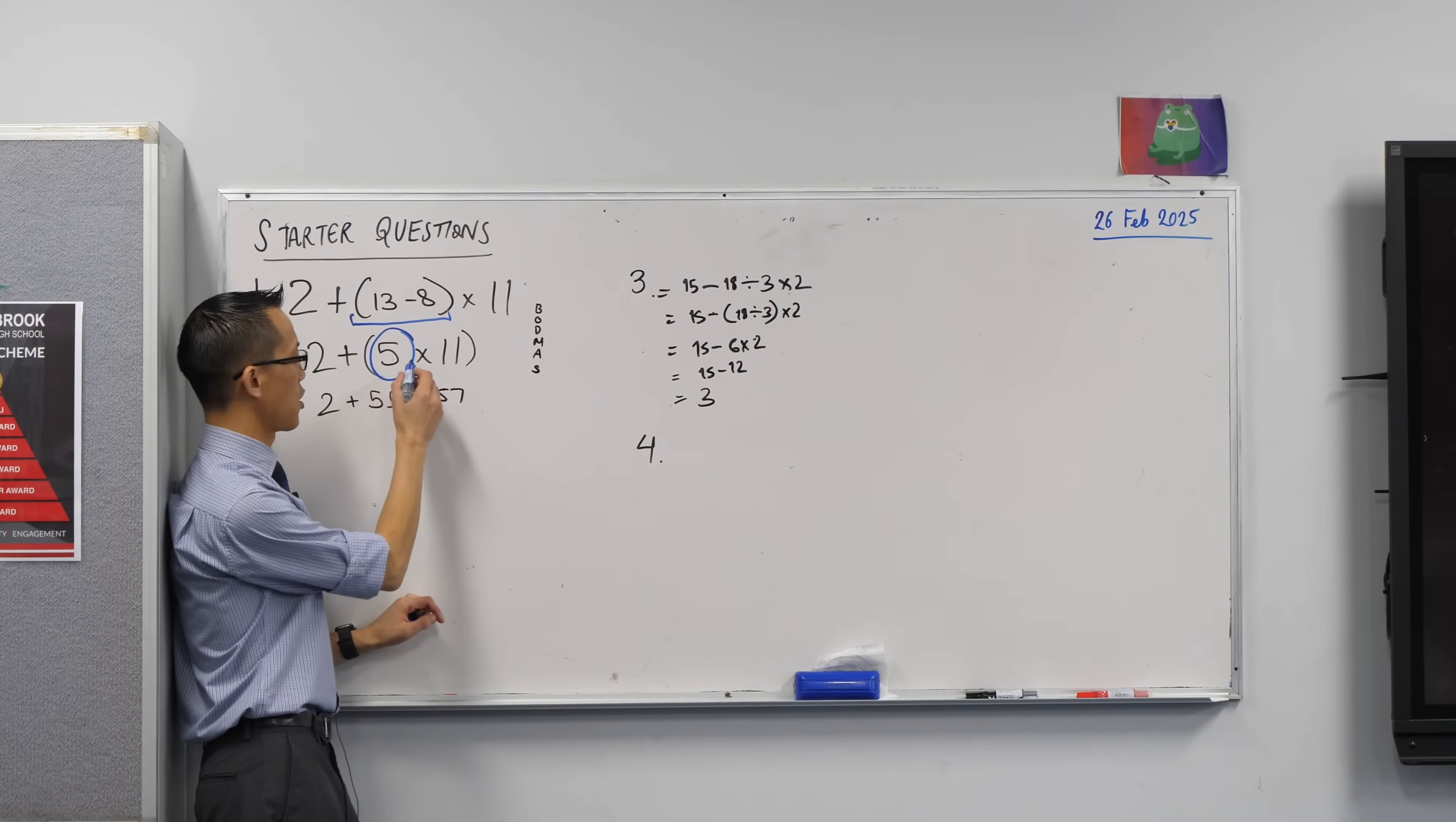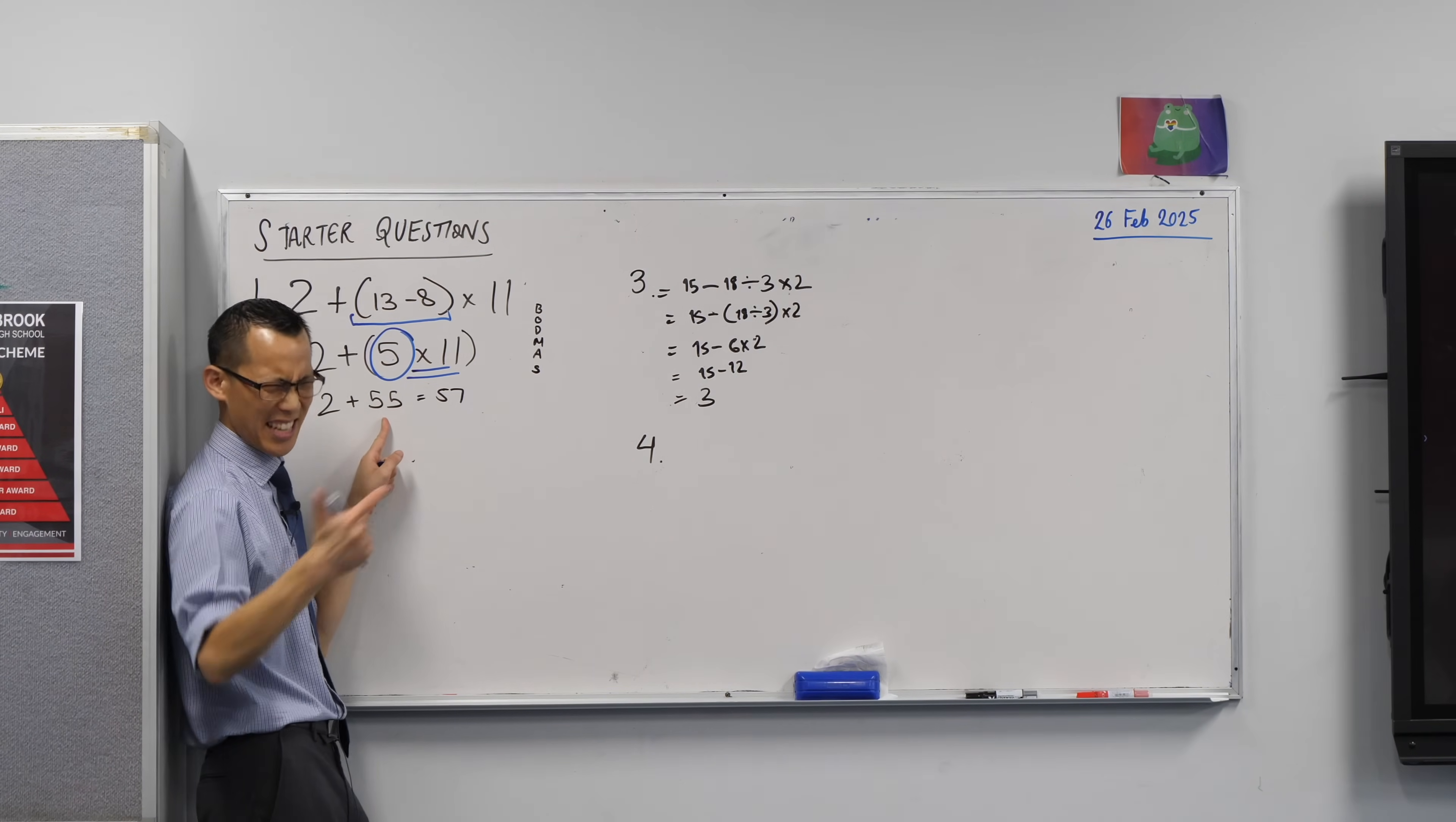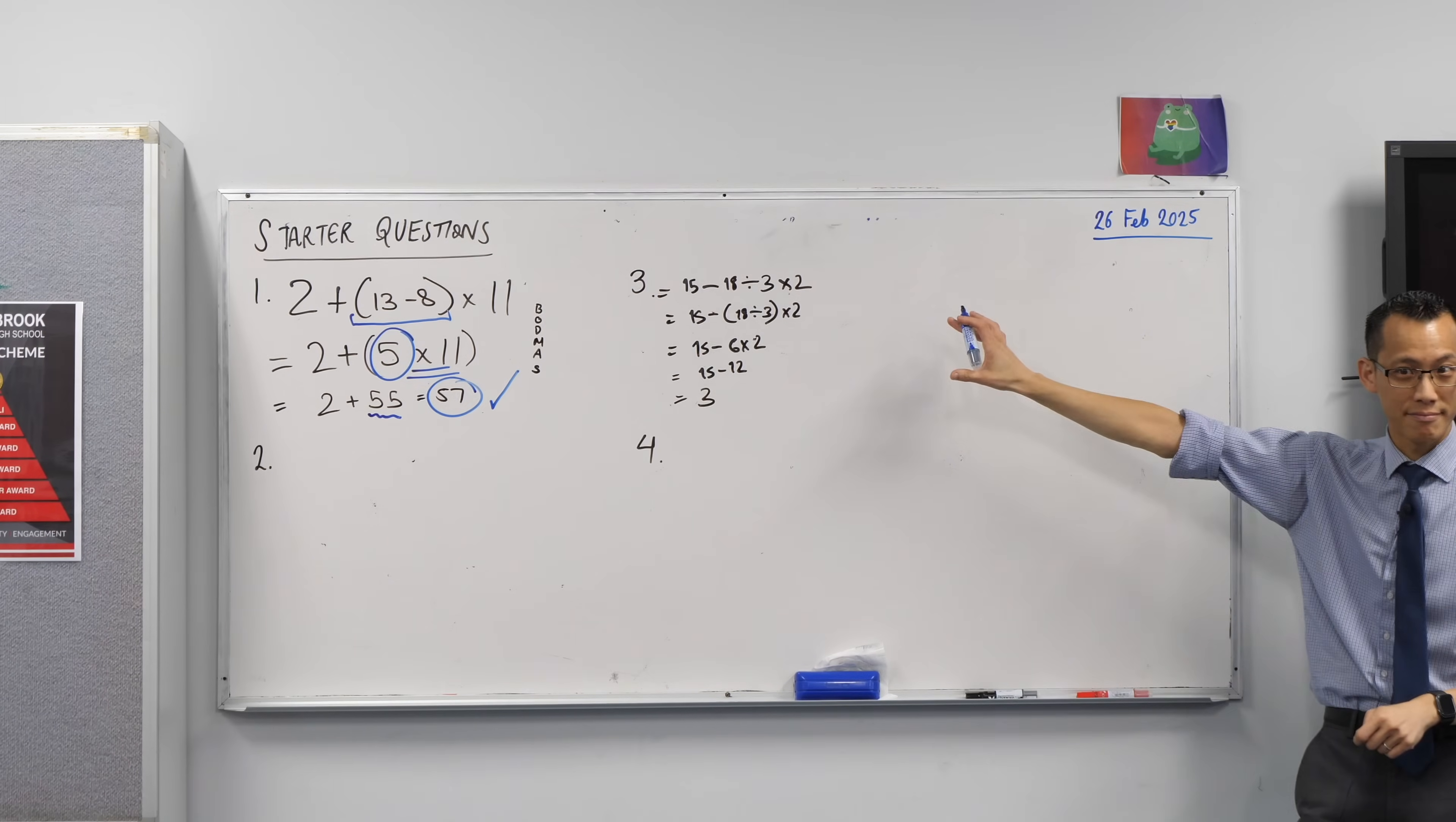Great. So I can see multiplication or division right here. Is 5 times 11, 55? Cool. Both the 5 times tables and the 11 times tables are both really nice. So I'm really happy with that and I guess that's why so many of us got 57. Excellent. Any questions on that so far? Great.